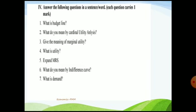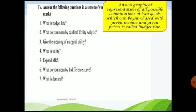Coming to the fourth part — answer the following questions in a sentence or word. First: what is a budget line? A budget line is the graphical representation of all possible combinations of two goods which can be purchased with a given income and given prices. The key point is given income and prevailing prices. When plotted on a diagram, it gives the budget line indicating possible combinations of two goods that can be purchased.